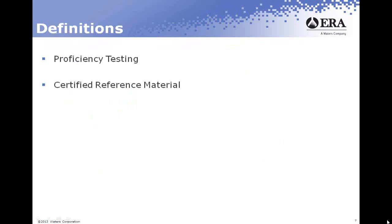I want to start by giving a very brief explanation of two key terms: PT, or proficiency testing, and CRM, or certified reference material. Proficiency testing samples are blind standards that involve a group of laboratories performing the same analyses on the same samples and comparing results. The key requirements are that the samples are homogeneous and stable, and appropriate to test similarities and differences in results. These are the samples that need to be reported back to ERA. Certified reference materials, also known as QCs or quality control standards, are standards of a known value. They are homogeneous and stable with respect to one or more specified properties, with traceability and uncertainty values established where applicable. CRMs can be used to check internal quality control processes, demonstrate analyst capability, or troubleshoot instrument or method issues. These do not need to be reported back to ERA.